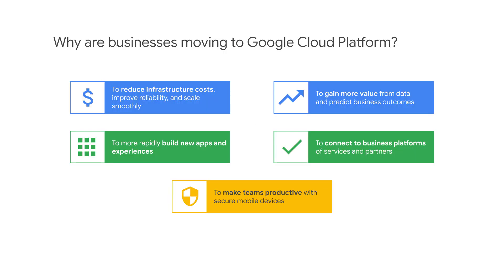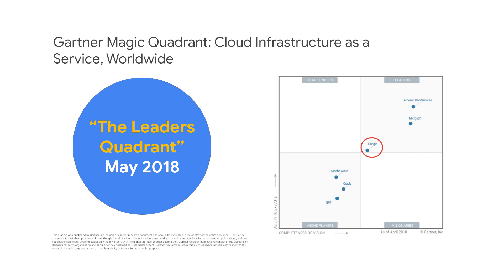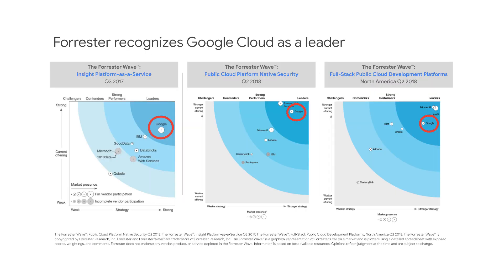So, why are businesses moving to Google Cloud Platform? When making this transition, most companies are not just looking at how they can move their existing computing to the cloud, or to reduce costs and increase reliability and security. They are also hoping to create new opportunities. Google Cloud has been placed in the leaders quadrant by Gartner in 2018, and Forrester also recognizes Google as a leader in key areas of cloud computing.